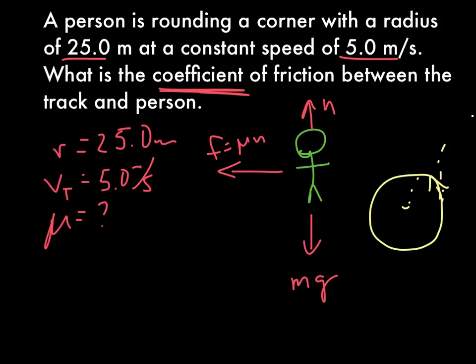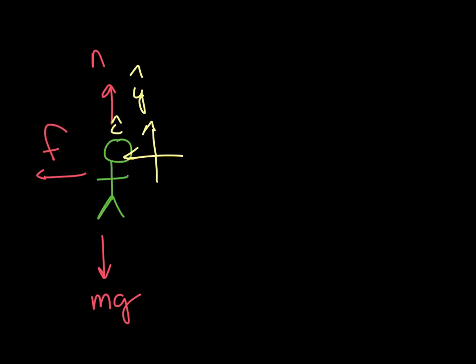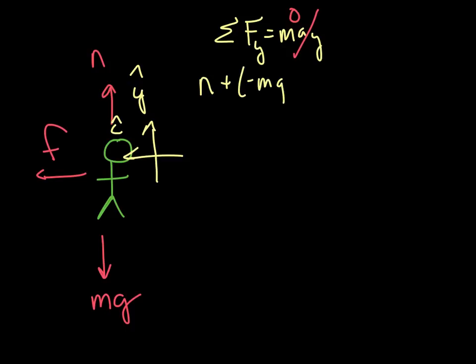Let's talk about how this sets up. You start this problem just like any other force problem. Sum of forces — I'm going to start with the y-direction — equals m times a_y. If we notice, you're not accelerating in the y direction. So you wind up with normal force plus negative mg equals 0, or N equals mg. That's the first result.